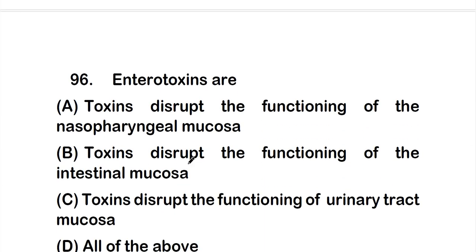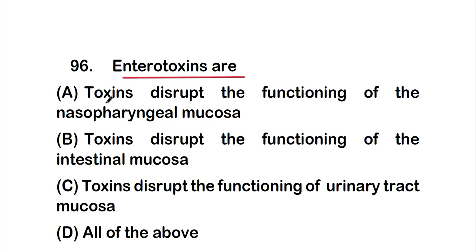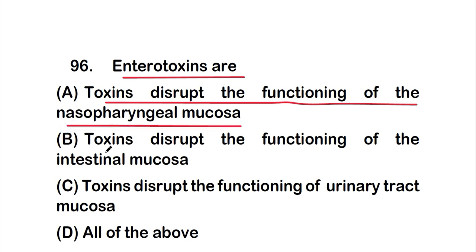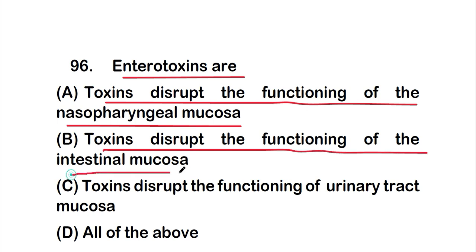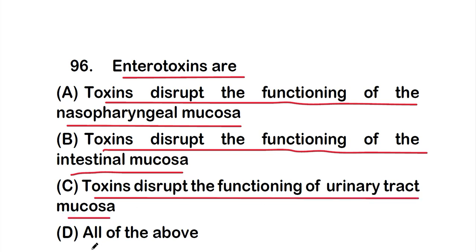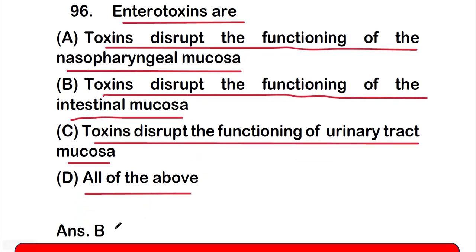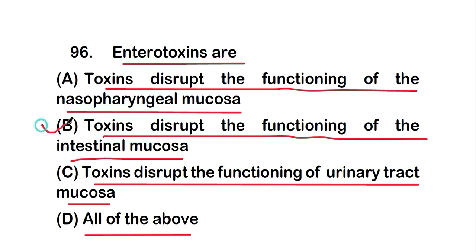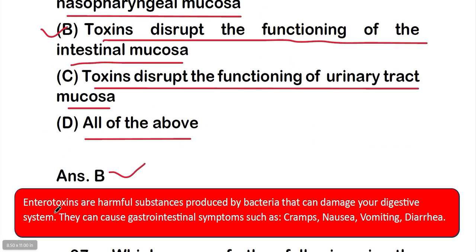Question number 96: Enterotoxins are — option A: toxins that disrupt the functioning of the nasopharyngeal mucosa, option B: toxins that disrupt the functioning of the intestinal mucosa, option C: toxins that disrupt the functioning of the urinary tract mucosa, option D: all of them. The correct answer is option B — enterotoxins are toxins that disrupt the functioning of the intestinal mucosa. They are harmful substances produced by bacteria that can damage your digestive system, causing symptoms such as cramps, nausea, vomiting, and diarrhea.